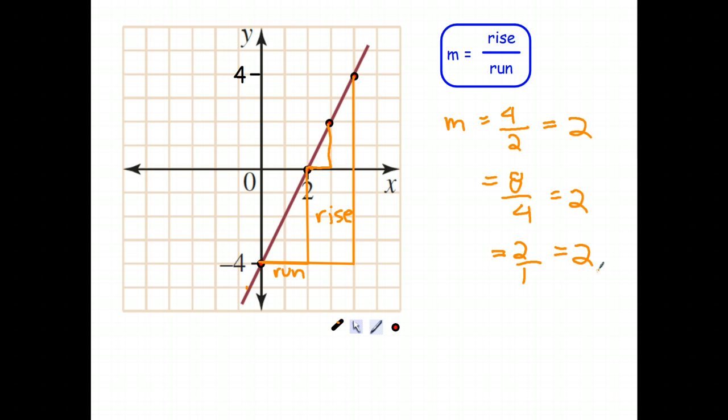So the important thing to learn from this slide is the gradient of a linear function is a measure of its steepness. And the way we measure the steepness is pick two points on the graph and work out the rise, how high we have to go or how much we move up from one point to the next, and how much we move across. Let's have a look at the next slide.